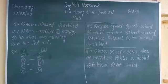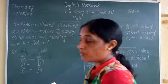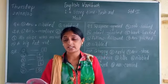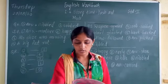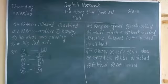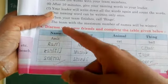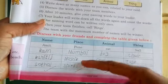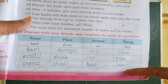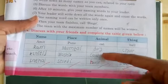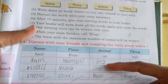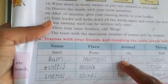We have completed lesson 1.4 'Story Time: Yes and Moti.' Now we are going to start with lesson 1.5 — Language Study: Naming Words. At the start, discuss with your friends and complete the table given below. You have to write names of people, names of places, names of animals, and names of things — non-living things like pen, pencil, chalk, duster, eraser, sharpener. In animals you can write dog, cow, buffalo, and cat is already given.